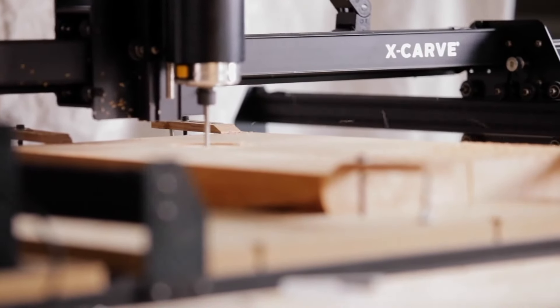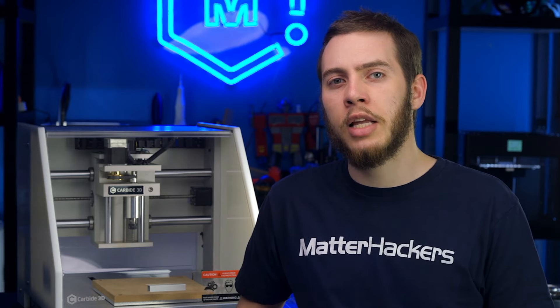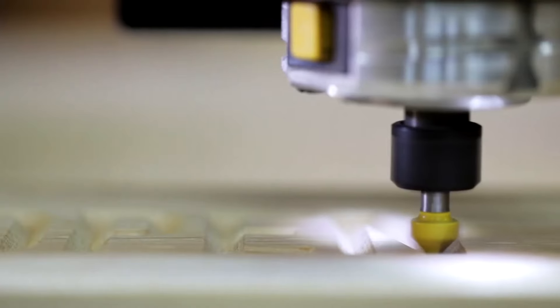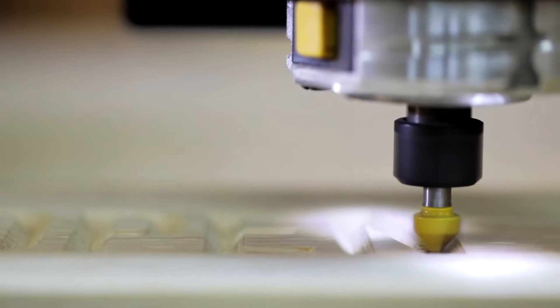Cutting metals will take a little more finesse. Soft metals like aluminum, copper, and brass are basically the extent of these machines' capabilities. And even still, you're going to need to carve a lot slower than you would with a wood project to get a nice finished edge.